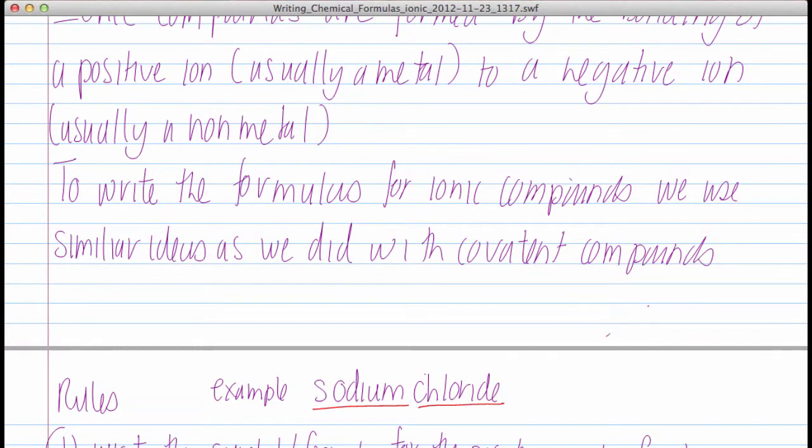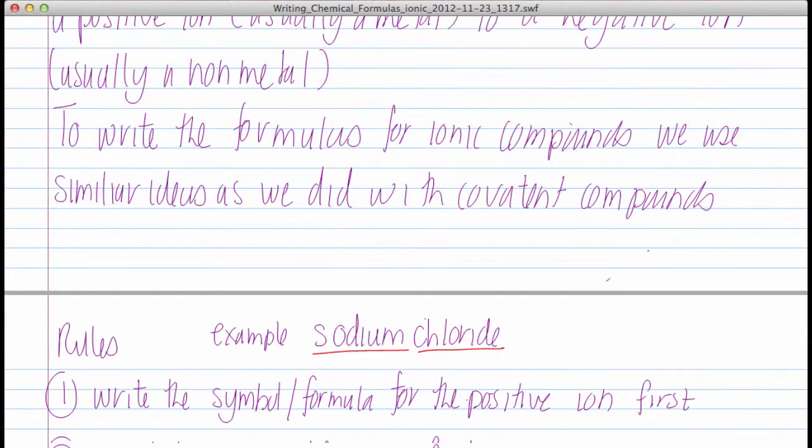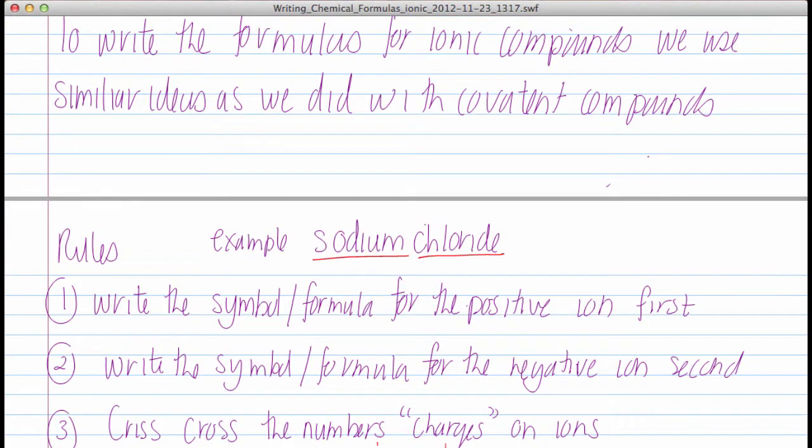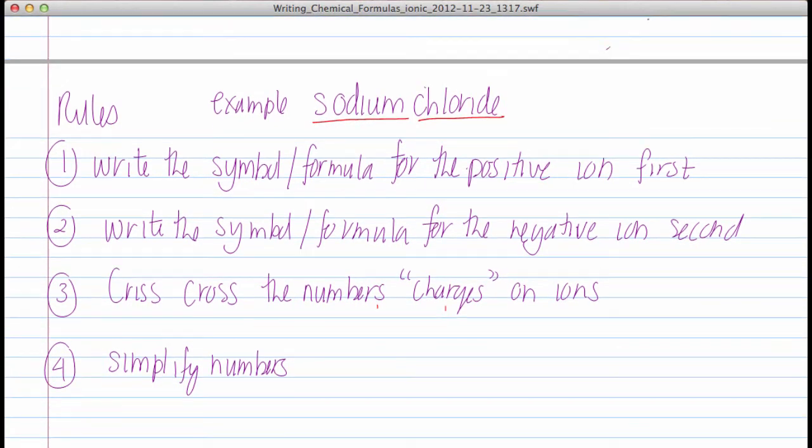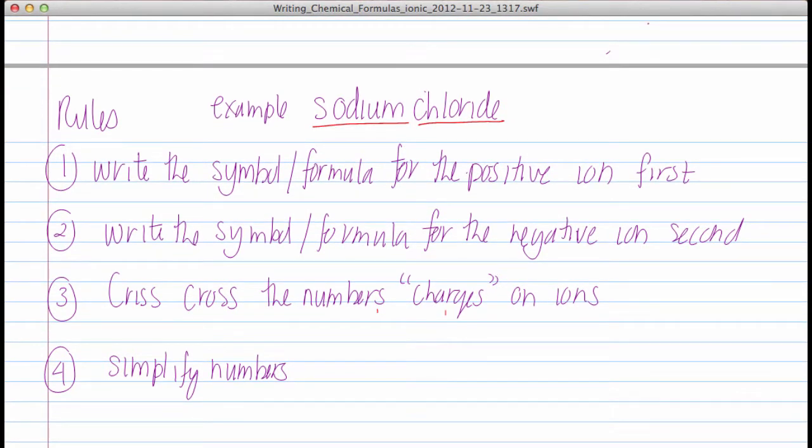To write the formulas for ionic compounds, we used similar ideas as we did when we did covalent compounds. The first example we're going to go through here is for sodium chloride.